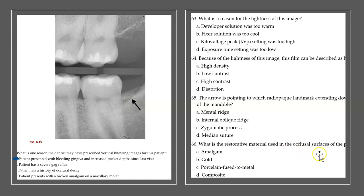Looking at the restorative material on the occlusal surface of the posterior teeth: the material is composite. Composite appears less radio opaque than amalgam or gold. Amalgam would be much more radio opaque. Gold would also be highly radio opaque. PFMs would be radio opaque with a porcelain component visible as well — none of which we see here. So this is definitely composite.